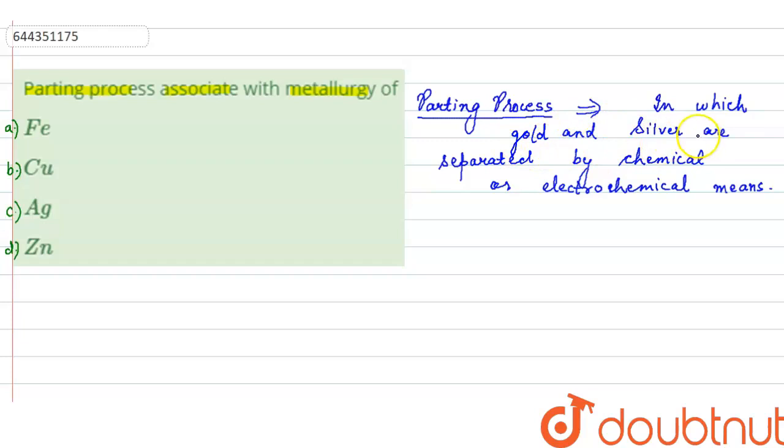we get silver and gold as by-product. So that is why there is a need of parting process. From here we can say that parting process associate with the metallurgy of gold and silver, because it is used to separate gold and silver.